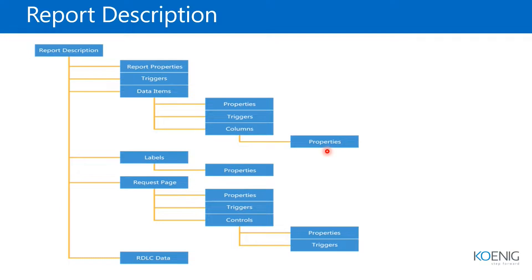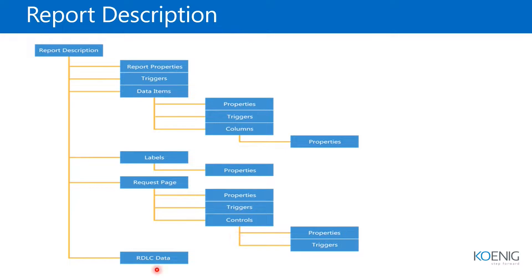This is how we write a report in Business Central using the AL language in VS Code. First, we write the keyword 'report', then the ID of the report — the ID ranges provided by the CSPs — and then the name. After that, we write the properties of the report, then the triggers, procedures, or global variables at the bottom, plus any labels. If we want to create a request page for a report, we can do it inside the report description, and then we have the layout.